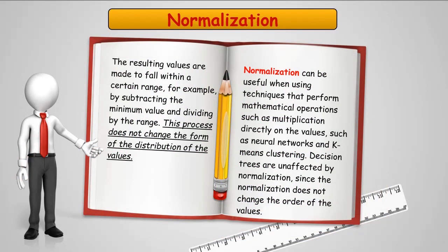When we put numbers through a normalization process, we're making them fall within a specific range. For example, subtracting the minimum value and dividing by the range. This process does not change the distribution form, it only changes the values. Normalization is going to be very common in neural networks and k-means clustering. Decision trees are generally unaffected by normalization.